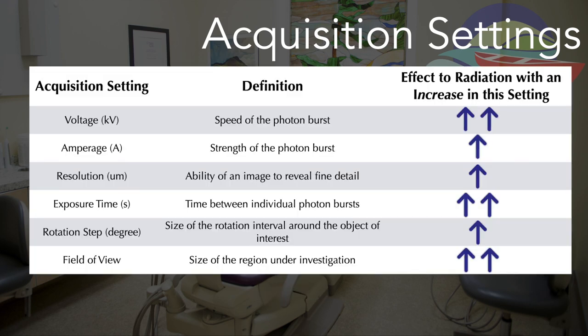The first setting, voltage, is the measure of the electrical force applied to move the electrons from the negative to the positive pole — so to move the electrons from the source to the detector. The voltage is the speed of the electrons and is measured in kilovolts. The second, amperage, is a measure of the number of electrons moving through the conductor. The amperage is the strength of the photon burst and is measured in amps.